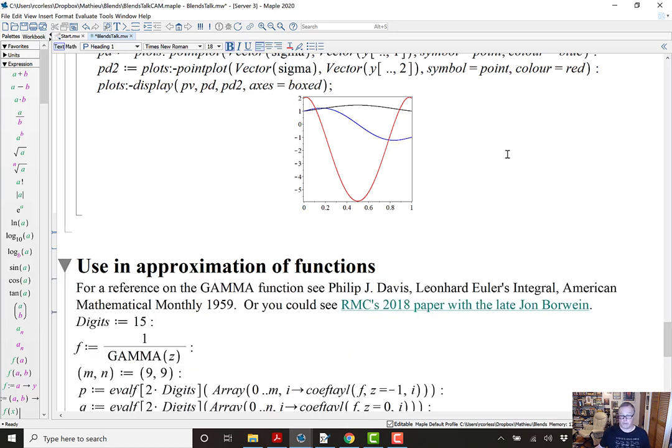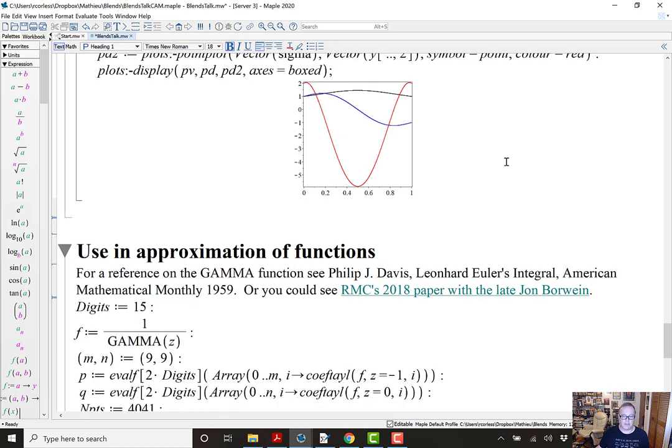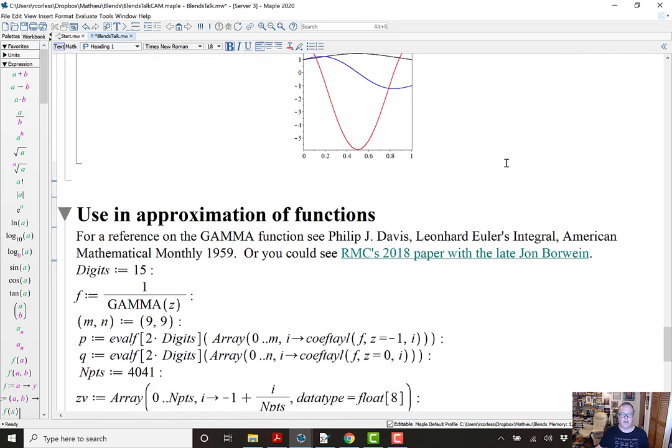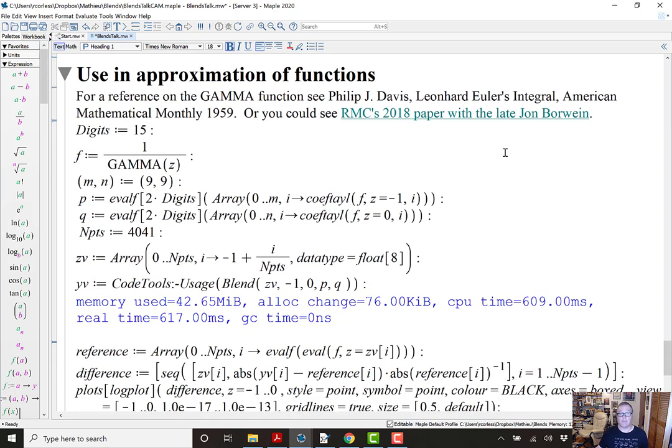One use, one main use for blends is to make simple approximations of complicated functions. There's lots and lots of ways of doing this, but this is a convenient way for some functions. Here, let's look at the reciprocal gamma function. For reference on the gamma function, I highly recommend the Chauvinet Prize winning paper by Philip J. Davis, 1959, Leonard Euler's Integral. Or you could see my paper with the late John Borwein in 2018. But here we take f is the reciprocal of gamma. It's entire. It has Taylor series everywhere. We're going to look at the interval minus 1 to 0.